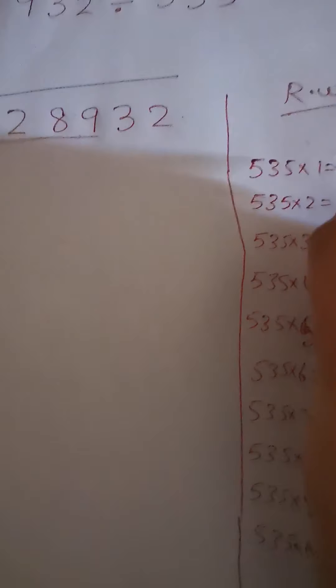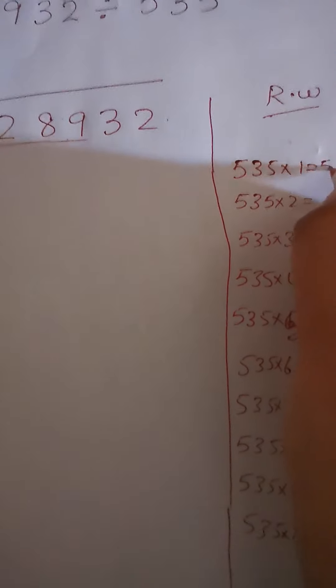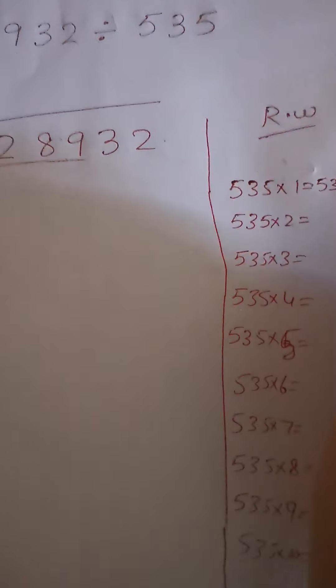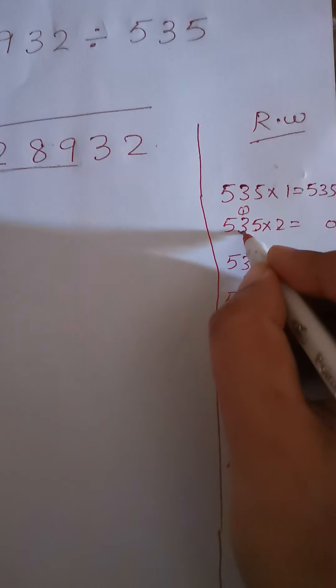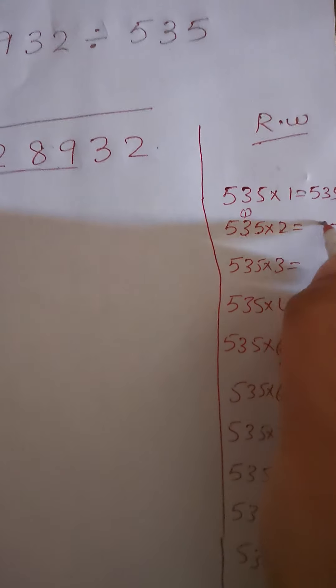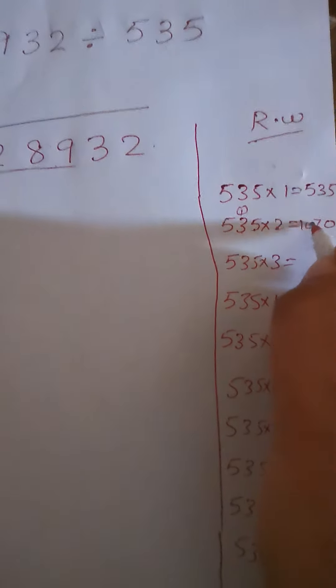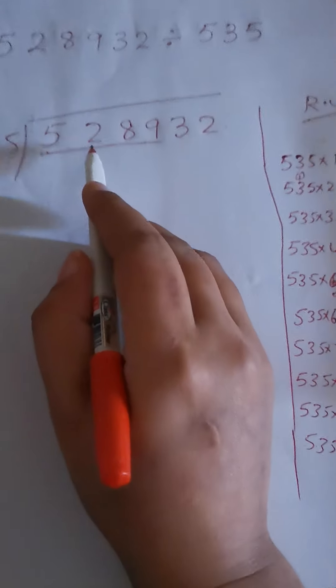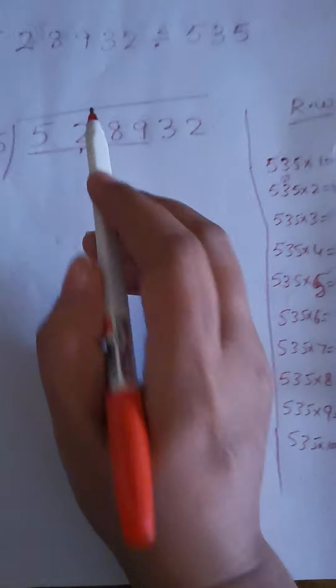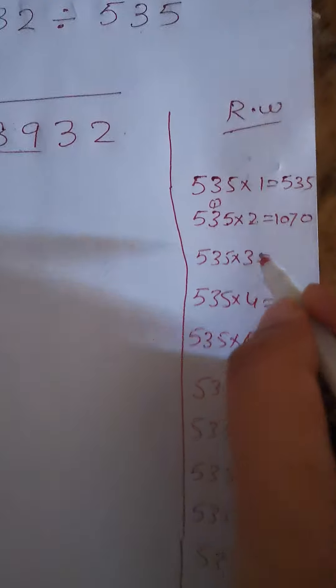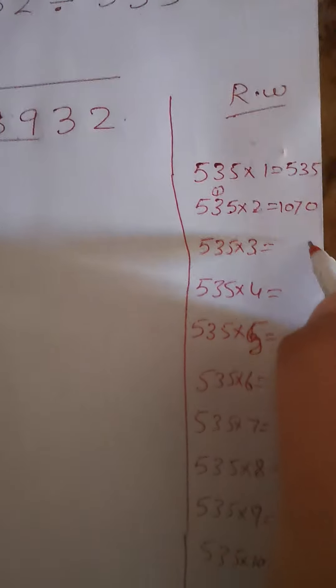Let's do the rough work. 535 multiplied by 1 is 535. For 535 times 2: 2×5 is 10, 0 with 1 carry, 2×3 is 6 plus 1 is 7, 2×5 is 10. That gives 1070, which is very less. We have to solve till we get equal to it or near to it.